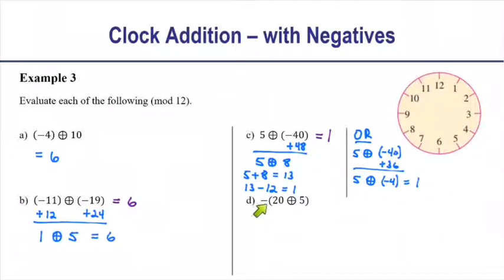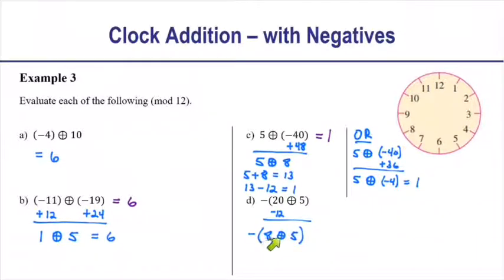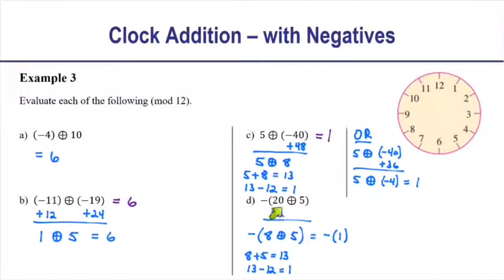For part D: we have a negative sign in front of parentheses containing 20 circle-plus 5. According to order of operations, evaluate inside the parentheses first, then apply the negative. Since 20 is larger than 12, subtract 12 and rewrite as negative(8 circle-plus 5). Then 8 plus 5 is 13, and 13 minus 12 is 1, so the inside evaluates to 1. That gives negative 1. Since we can't leave a mod 12 answer as negative, add 12: negative 1 plus 12 is 11. So the negative of (20 circle-plus 5) is 11.